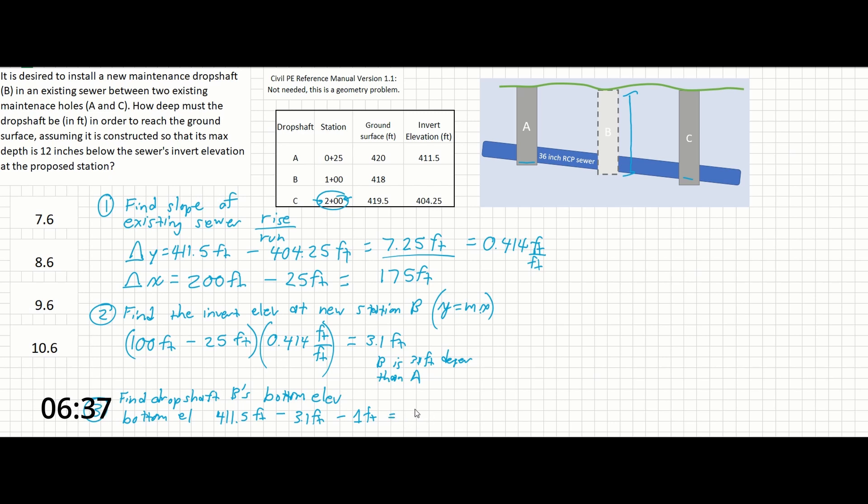And then finally we have step 4, which is just find the total depth of the drop shaft bottom. So depth is going to be equal to ground surface at B minus the drop shaft bottom elevation. So that's just going to be 418, given here, minus 407.4, which we've calculated, and that's going to give us 10.6 feet.